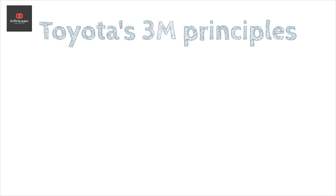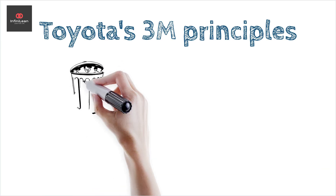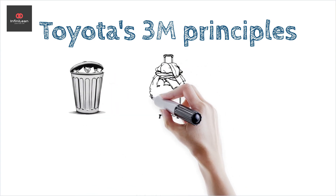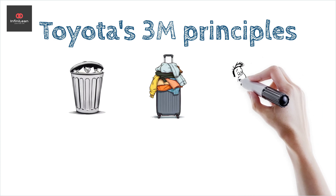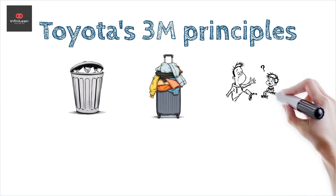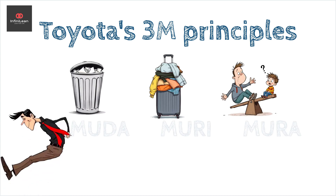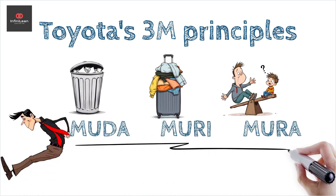Welcome to the InfiniLean channel, where we simplify Lean Six Sigma concepts. My name is Zach, and I will narrate today's exploration of the Lean methodology, focusing specifically on Toyota's principles of 3M: Muda, Mura, and Muri. These three Japanese terms are the cornerstones of Toyota's production philosophy, aiming to maximize efficiency and eliminate waste on the production floor.